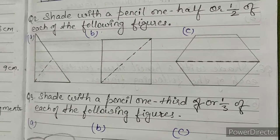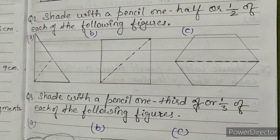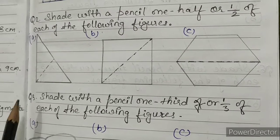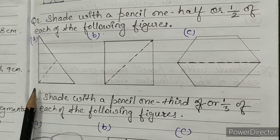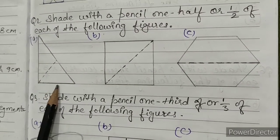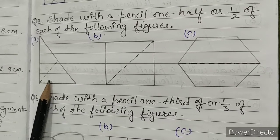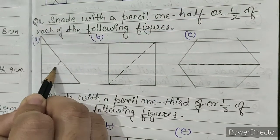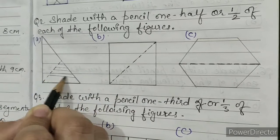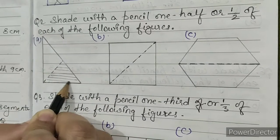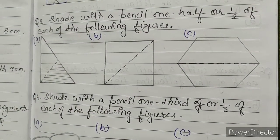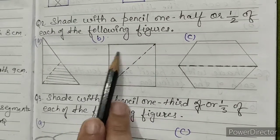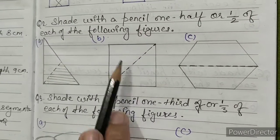Question number 2: shade with the pencil one half, or 1 by 2, of each of the following figures. A: this figure is divided into two equal parts; we have to shade one part, so I'm shading this part. B: this is a square also divided into two equal parts; we have to shade one part out of two.